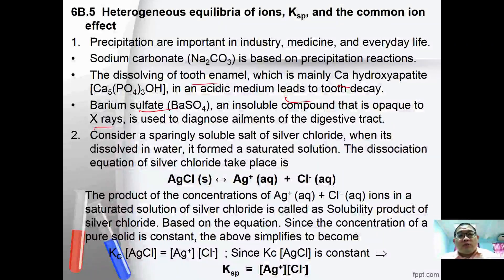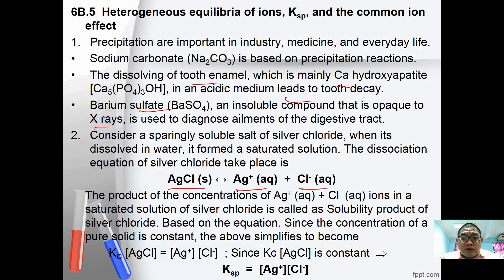Consider the sparingly soluble salt, silver chloride. When dissolved in water, it forms a saturated solution: AgCl(s) ⇌ Ag⁺(aq) + Cl⁻(aq). The product of the concentrations of Ag⁺ and Cl⁻ in the saturated solution of silver chloride is called the solubility product of silver chloride.